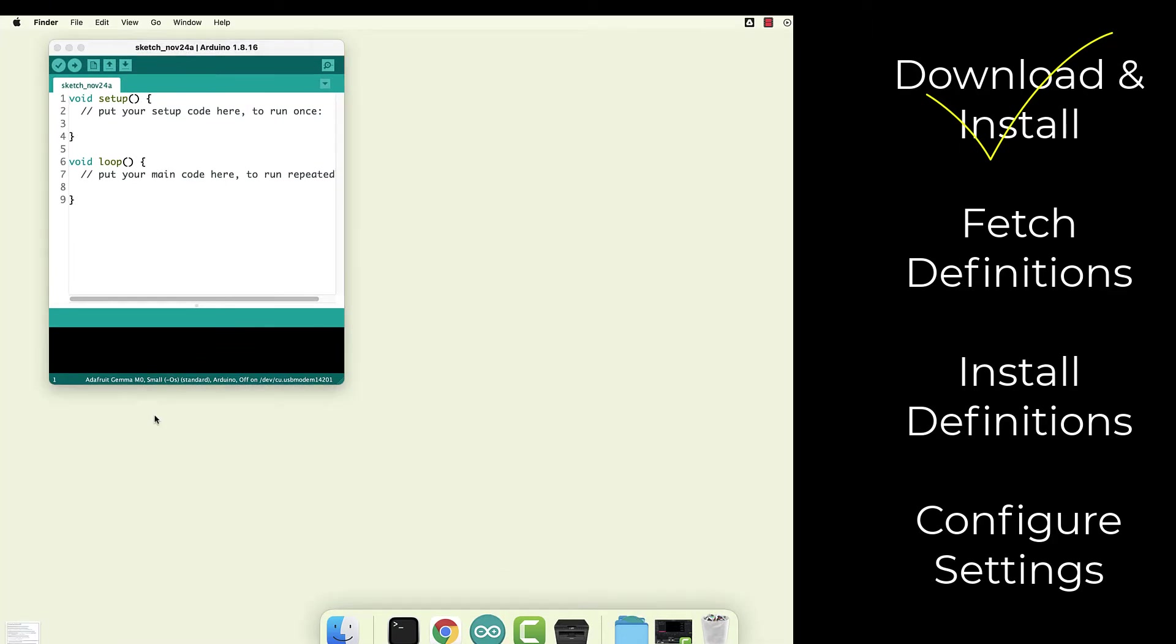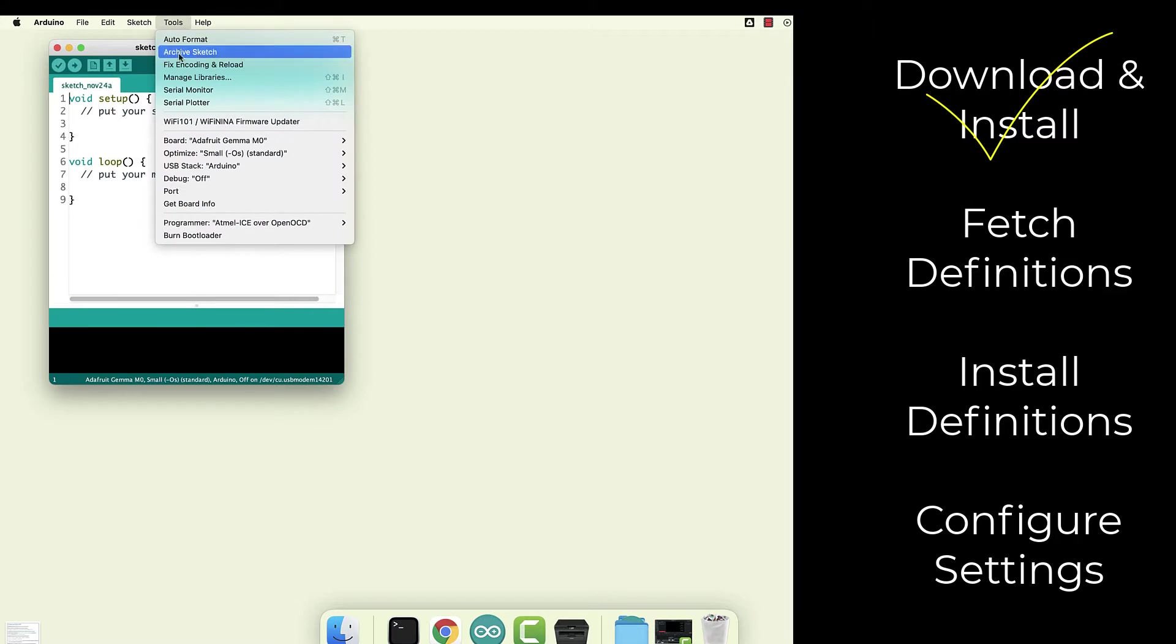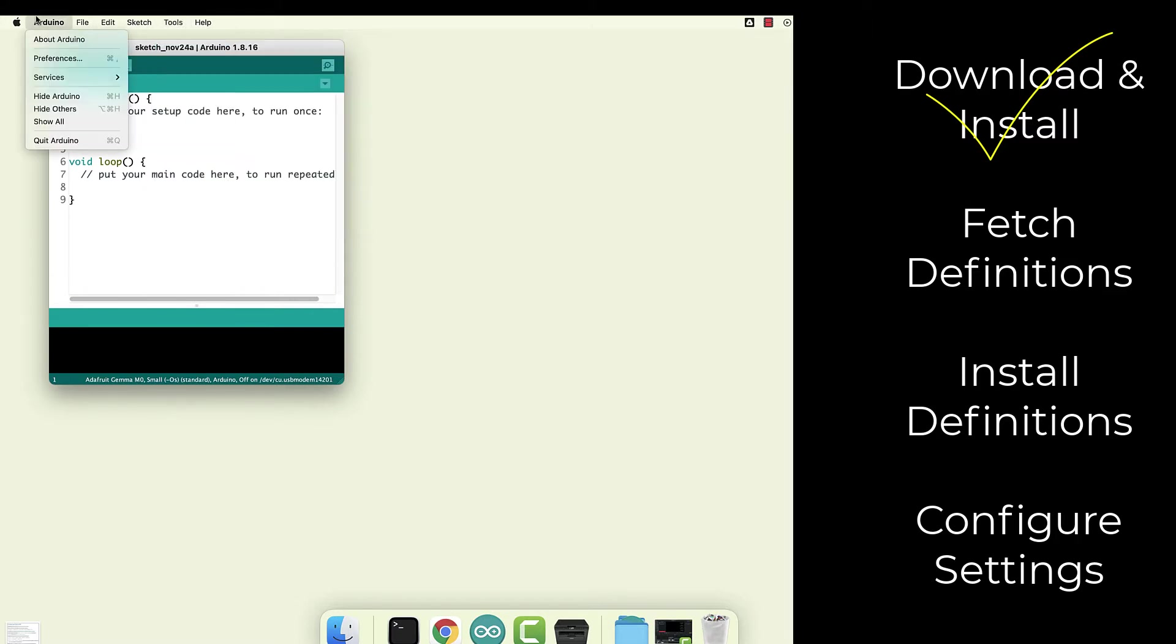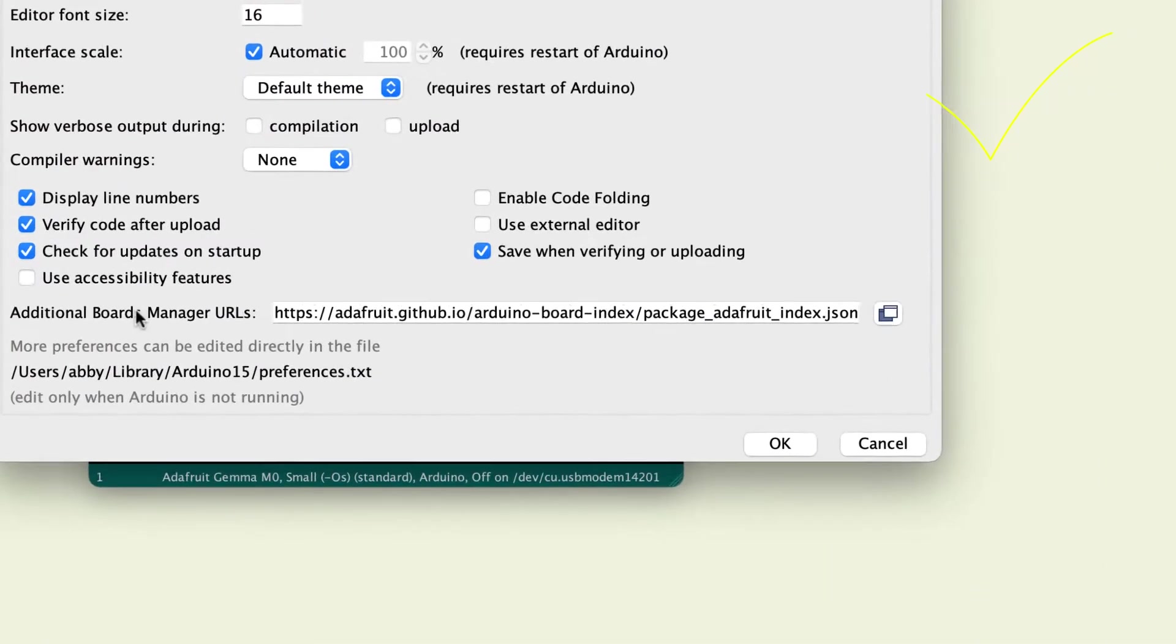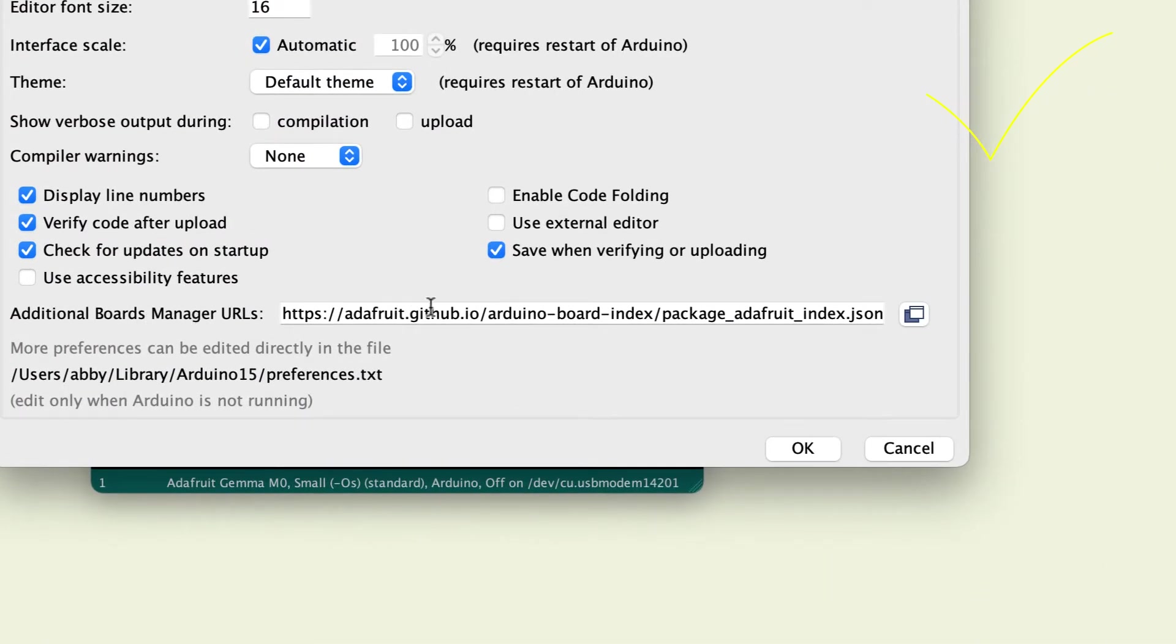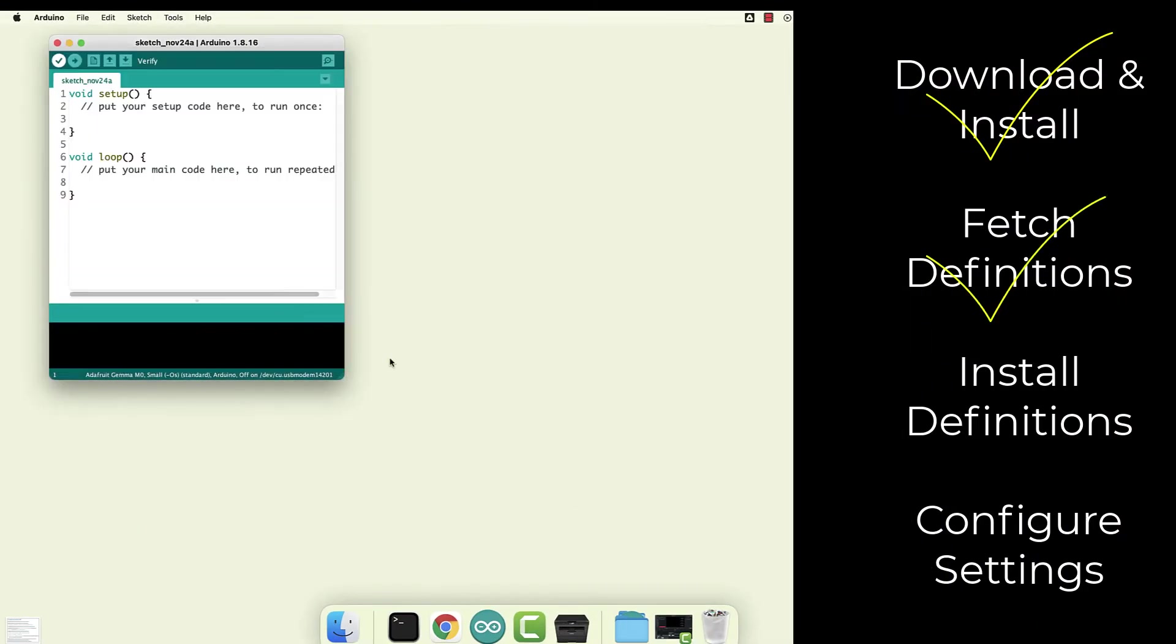Now we need to fetch the definitions for the Adafruit microcontrollers. Under preferences, now on Windows, this will be under file on Mac is under Arduino. But in preferences, there is an option for additional boards manager URLs. I've already got mine filled in, but you can grab that link from the video notes. It's just a JSON file that includes information about how to get the definitions. Press OK on that.